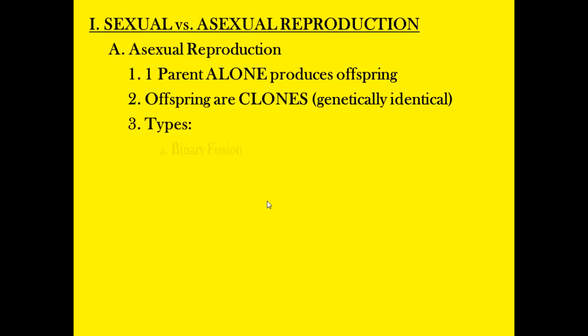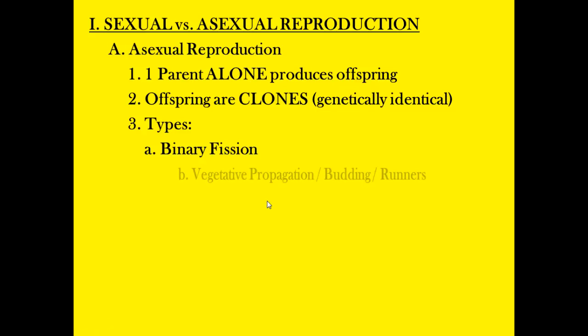Some types of asexual reproduction: binary fission — bacteria take this process, as do amoebas and paramecium. This is a way for organisms to reproduce that is very mitosis-like. Usually single-celled organisms split to form this.